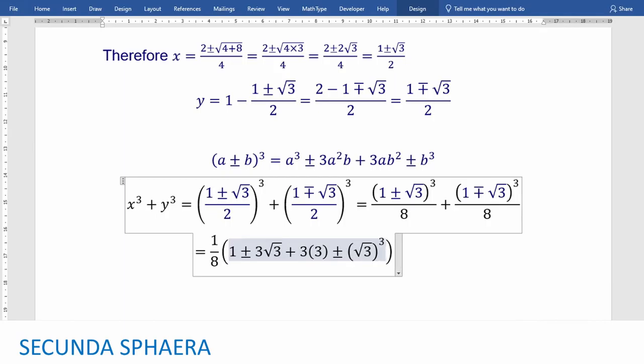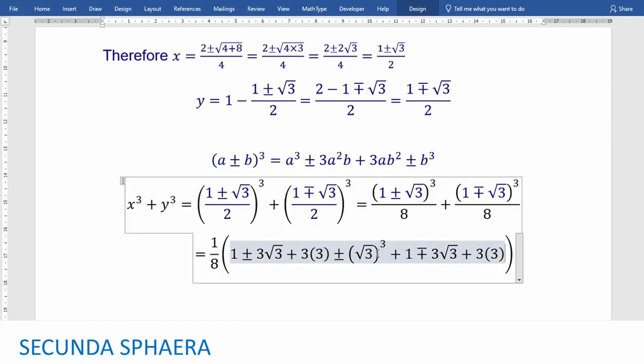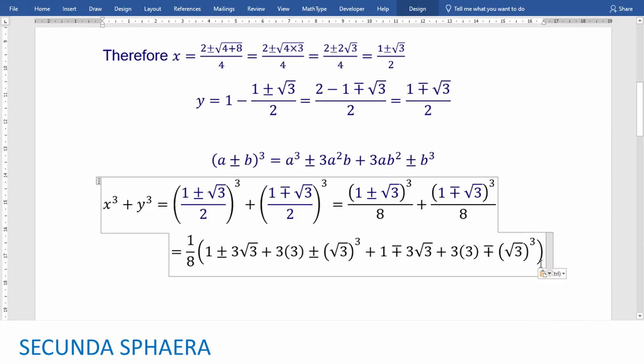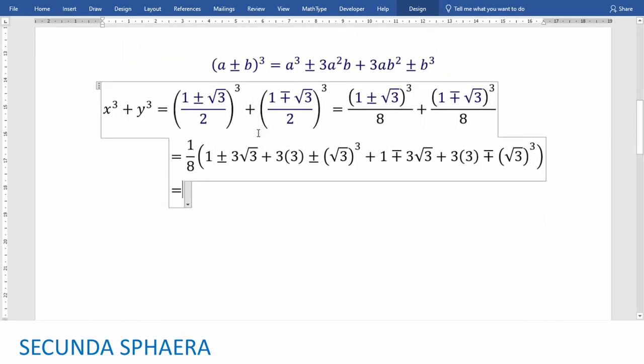We cube y. So we are now going to have plus 1. And minus plus. And we are just interchanging signs. And in this case, we have 3 square root of 3. Plus. Always plus. Again, 3. And now we square b, which in this case is again square root of 3. And again, we are interchanging signs. So minus plus. And again, we are pretty much going to have the square root of 3 cubed. So some nice things are going to happen. Continue a little bit.